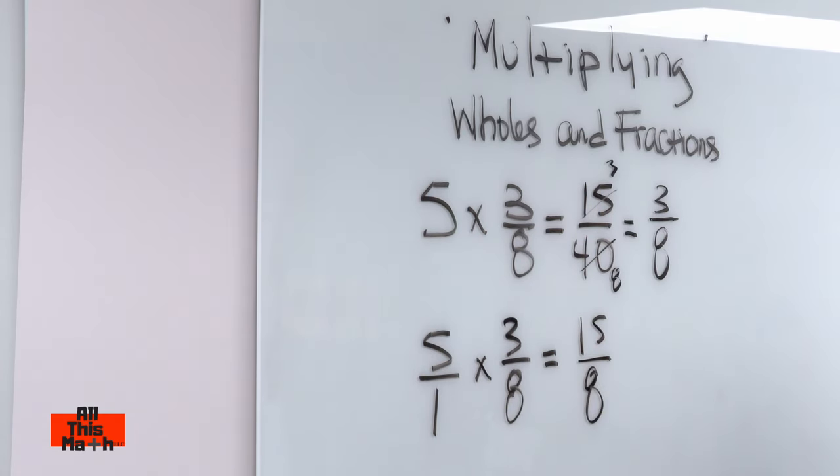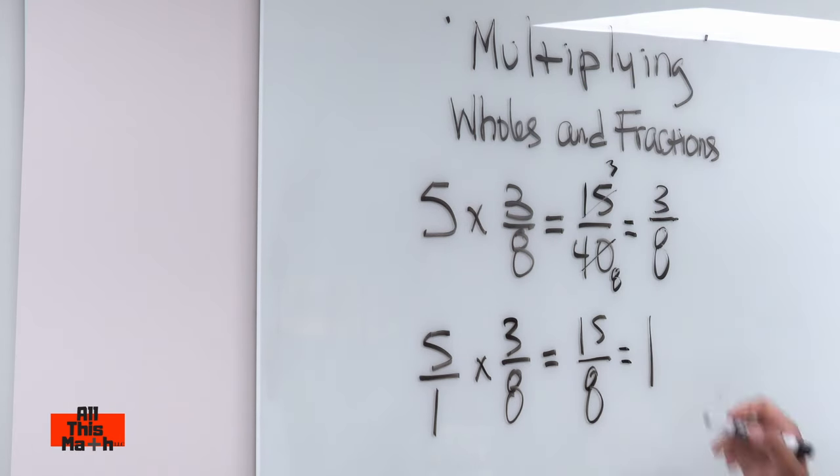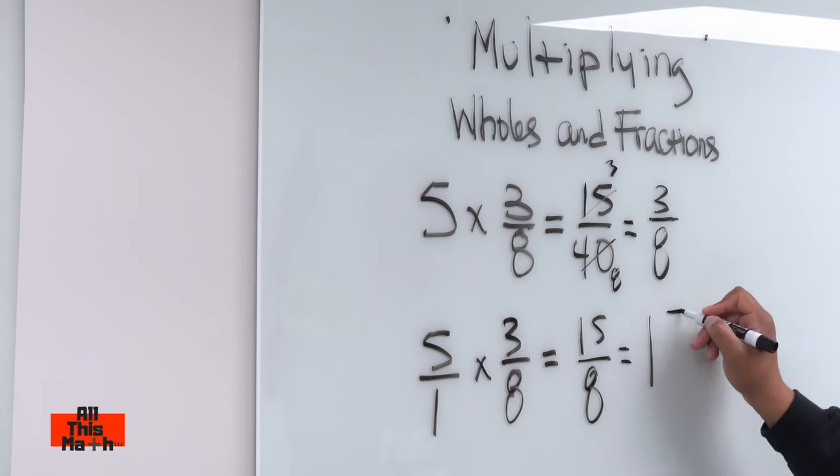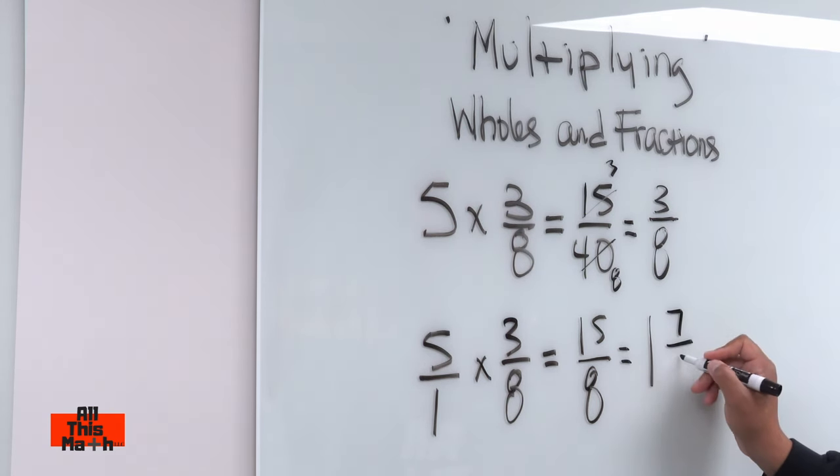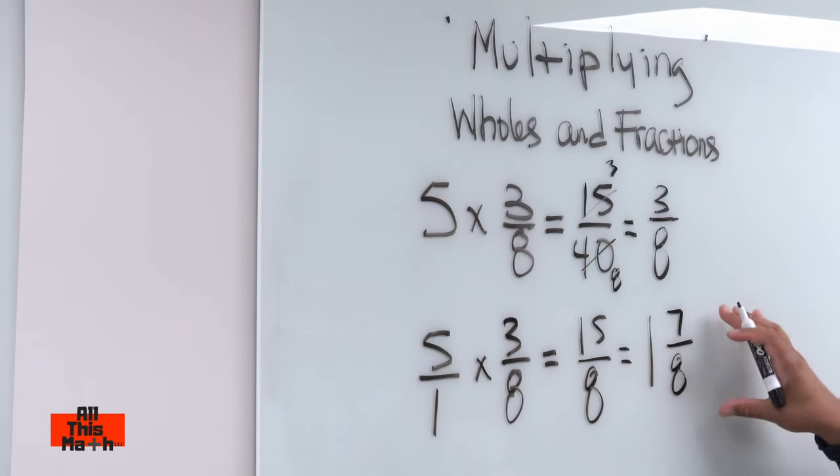And this is an improper fraction because your numerator is bigger than your denominator so we want to convert this into a mixed number. So how many eighths can fit into 15? One whole group of eighths can fit into 15. So that's going to be one for our whole number part and then how much is left over. You do 15 take away eight which gives you seven. That's your numerator and then you keep the same denominator. So five times three eighths is actually 15 eighths or one and seven eighths.